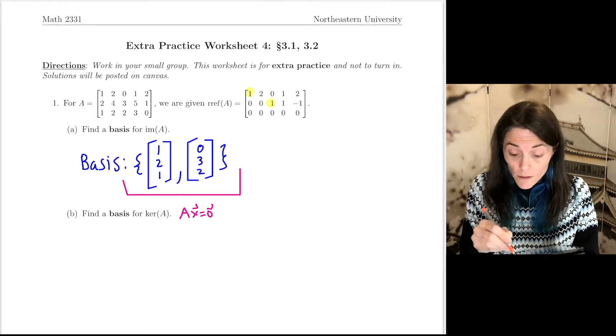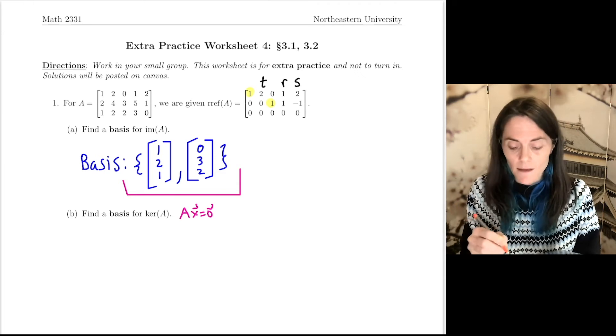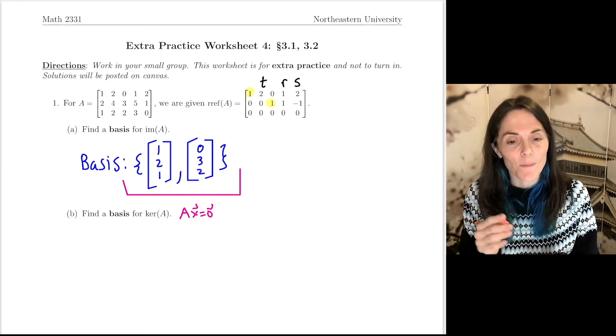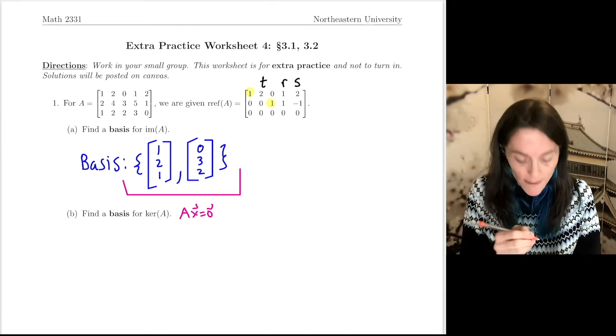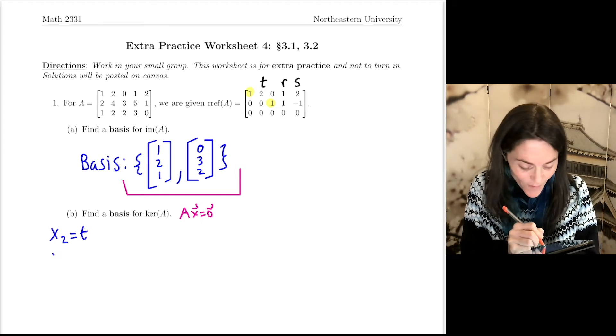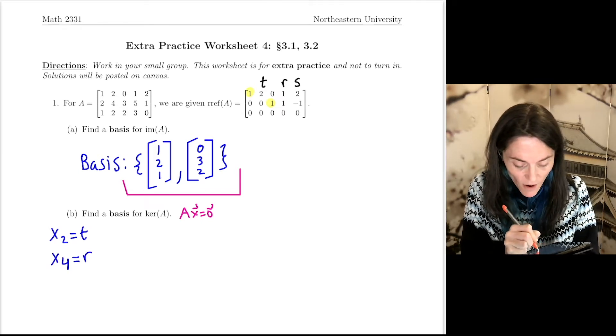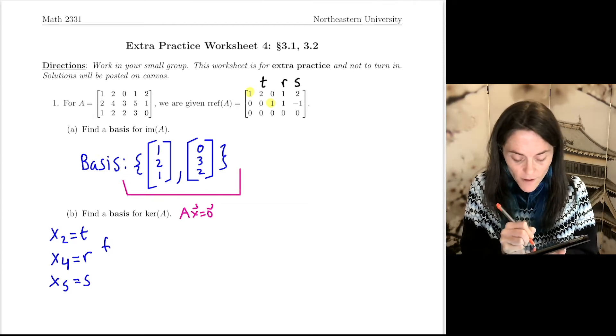Here I have free variables. Let's say this is T, this is R, this is S. I have three free variables here because I have five columns and two of them have leading ones.